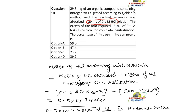What will be the weight of nitrogen? That will be equal to the number of moles, that is 0.5 into 10 to the power minus 3, multiplied by 14. So the weight of nitrogen equals 14 into 0.5, which comes out to be 7 into 10 to the power minus 3 grams.